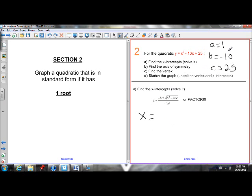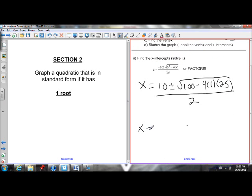All right. So x equals negative b. Negative 10 is just 10, plus or minus the square root of negative 10 squared. That's 100. Minus 4 times 1 times 25. All over 2a, 2 times 1 is 2.